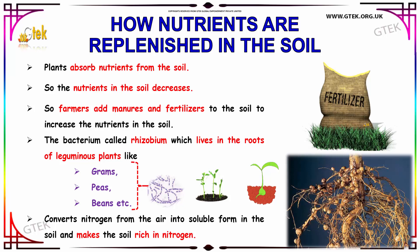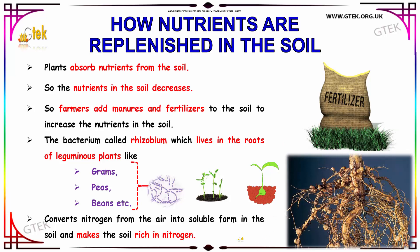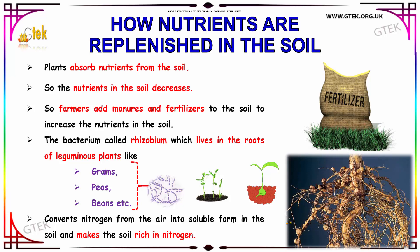Let us talk about how nutrients are replenished in the soil. Plants absorb nutrients from the soil, so the nutrients in the soil automatically decrease. Farmers add manure and fertilizer to increase the nutrients in the soil. The bacterium Rhizobium, which lives in the roots of leguminous plants like grams, peas, and beans, converts nitrogen from the air into a soluble form in the soil, making the soil rich in nitrogen.